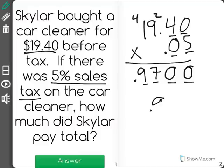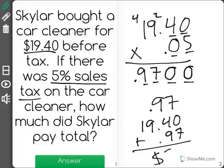So there's $0.97 of tax, but we have to add that $0.97 to the original amount, which was $19.40, to find out that the total amount she paid was $20.37.